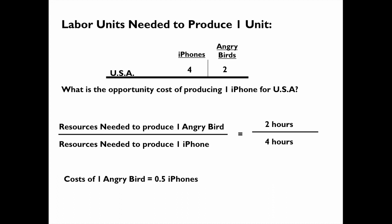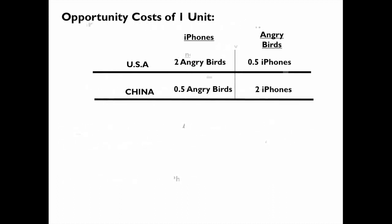If we calculate the opportunity cost in that way for the US and also for China, we come up with the following opportunity costs. For the US, it costs 2 Angry Birds to produce an iPhone, and it costs half an iPhone to produce an Angry Bird. And in China, it costs half an Angry Bird to produce an iPhone, and 2 iPhones to produce an Angry Bird.